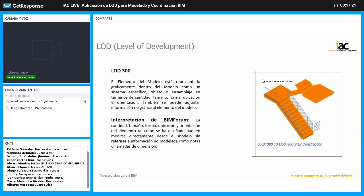En el LOD 300, el elemento dentro del proyecto ya es un elemento específico, un sistema que se sabe exactamente cómo va a funcionar. Tiene un tamaño, una forma, una ubicación y una orientación claras, y yo ya puedo empezar a adjuntar parámetros cuantitativos. La cantidad, el tamaño, la forma, ubicación y orientación del elemento pueden medirse directamente en el modelo. Ya debo tener claro cuál es la contrabuella, el tamaño de la huella, el descanso, el ancho del tramo de la escalera y hasta qué nivel sube.